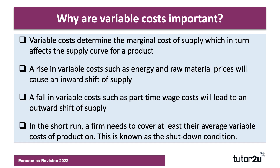One key area to revise is the shutdown condition — this is often tested by exam boards. In the short run, a business needs to cover at least their average variable costs, which is total variable cost divided by output. They need to get a price which at least covers their variable costs. If the price falls below that, it may take them below the shutdown point.